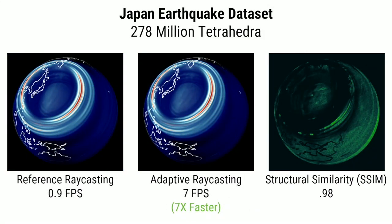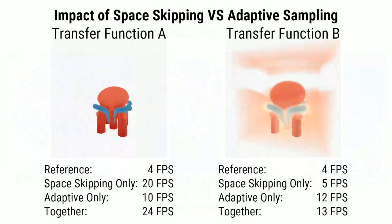On the Japan earthquake dataset we see roughly a 7x performance improvement, largely because a large portion of that volume has very similar data values that can be very adaptively sampled. We preserve details in high-variance regions but also see some issues in medium-variance areas. Finally, we compared using empty space skipping alone versus adaptive sampling alone versus combining the two, showing the overhead of our technique is lower than the performance benefits gained even on smaller datasets — though results depend on data type. On the left dataset there's a lot of empty space to skip, going from 4 to 20 frames per second, while on the right there's more to adaptively sample.